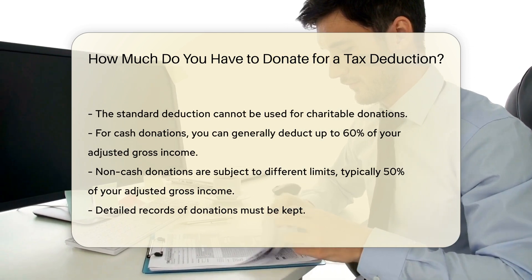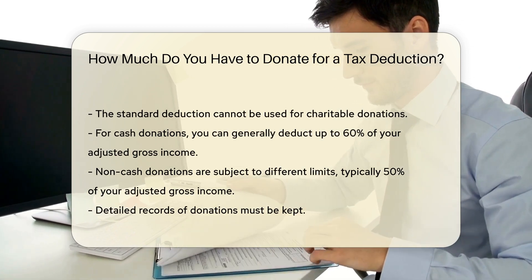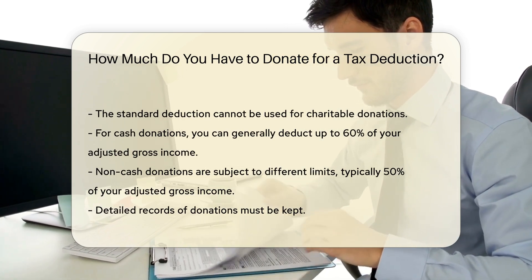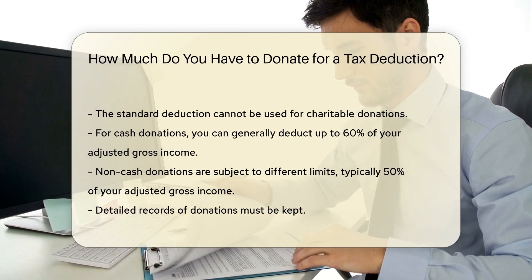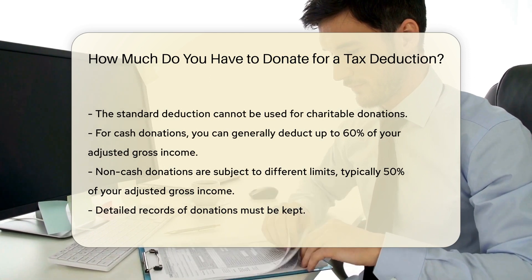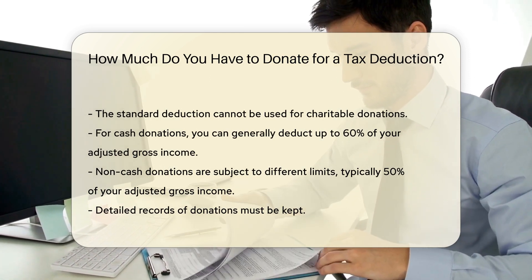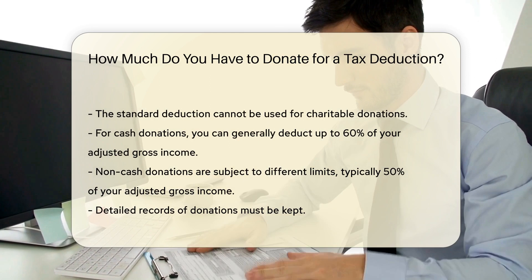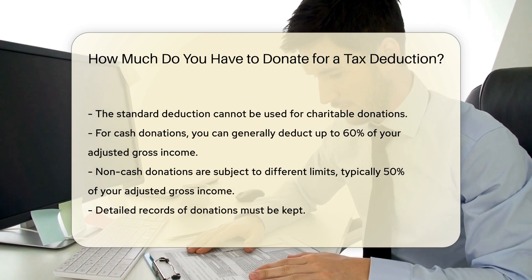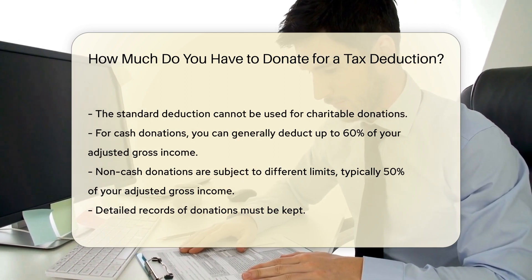For cash donations, you can generally deduct up to 60% of your adjusted gross income. Non-cash donations are subject to different limits. The limit for non-cash donations is typically 50% of your adjusted gross income.